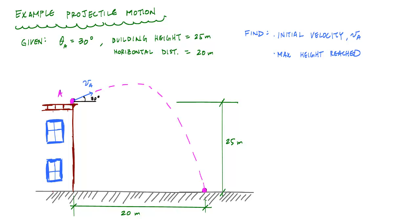What's going on everyone? Welcome back. In this video we have another projectile motion example problem. In this problem we're throwing balls or water balloons off a building. The projectile leaves at point A at an angle of 30 degrees with an unknown velocity. It lands at the bottom of the building, which is 25 meters down and 20 meters across horizontally. What we want to find is the initial velocity VA and the maximum height reached by this particle.